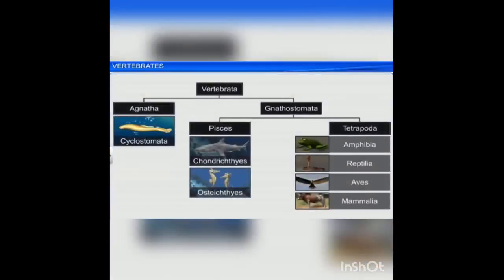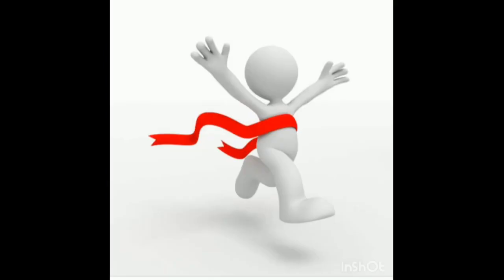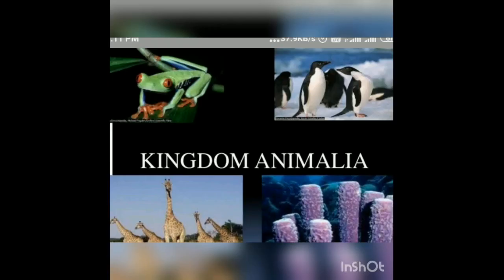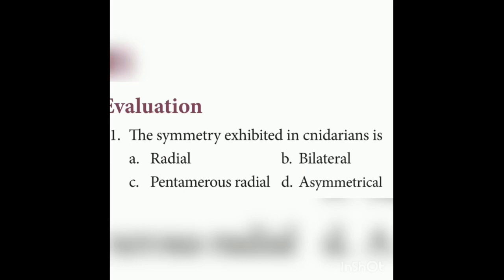We have completed the different classes of Vertebrata and have completed the second chapter, Kingdom Animalia. Now we are going to discuss the evaluation questions.